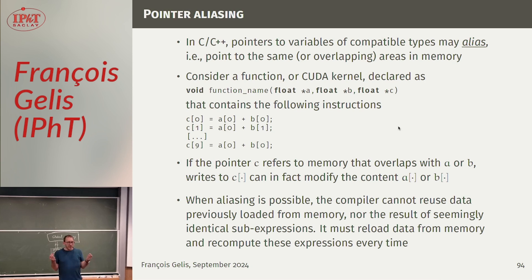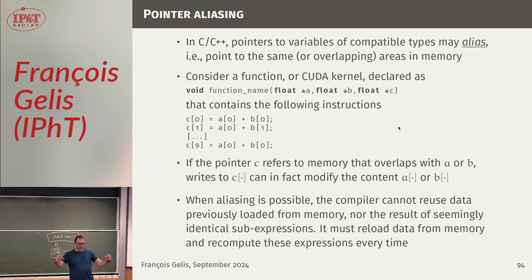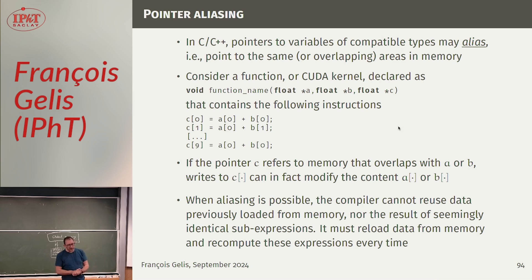A pointer is just an address - it gives you the address of the start of an array. Suppose you have a function declared with three pointers A, B, and C. The problem is that when the compiler sees that, it has no idea whether the memory areas pointed to by A, B, and C overlap or not. It just has three addresses where they start - it doesn't even know their real size. Because the compiler doesn't know if they overlap, it has to assume they may overlap. This is called pointer aliasing - B could be an alias for A, for instance.